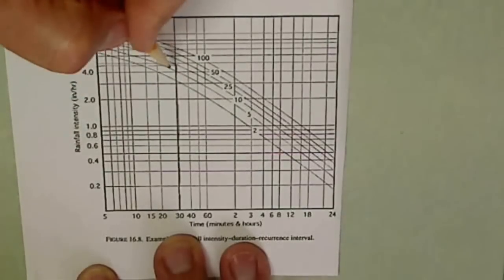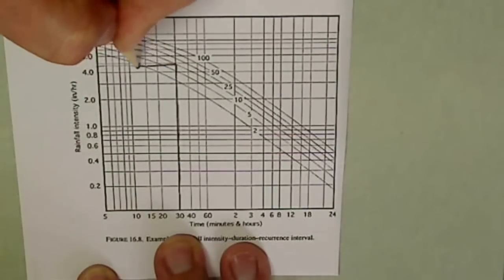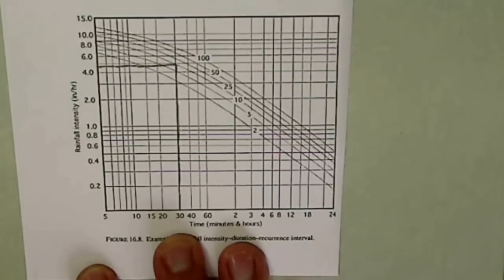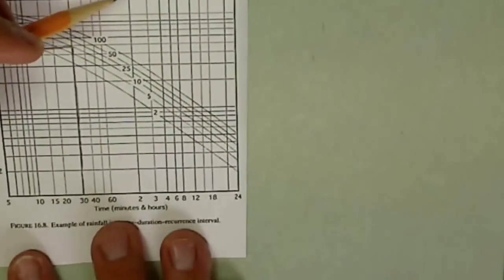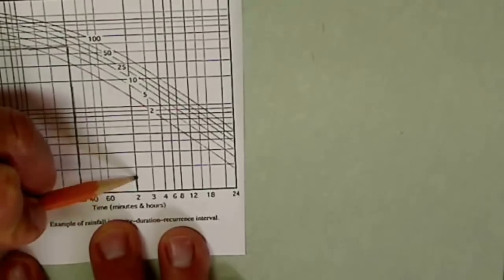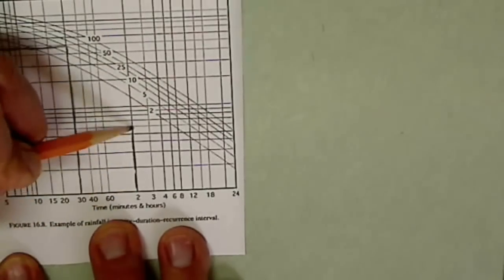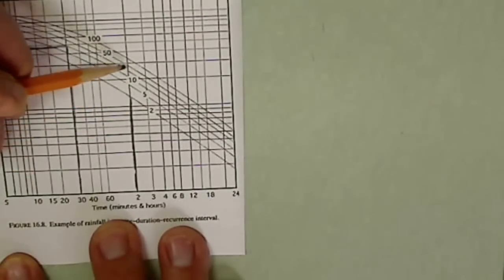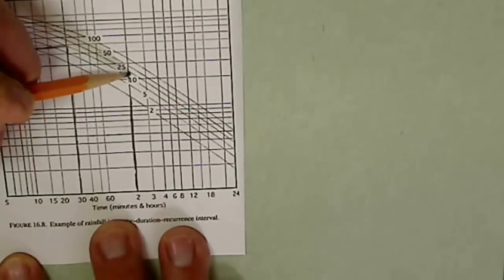I hope that makes sense. And let's darken this in just a little bit so you can see it better. There we go. Now let's do one more. Let's say that we had a 2-hour storm and it was on a 25-year event. We'd follow up the 2-hour storm. We'd follow it up to 2, 5, 10, and here's 25 right there.